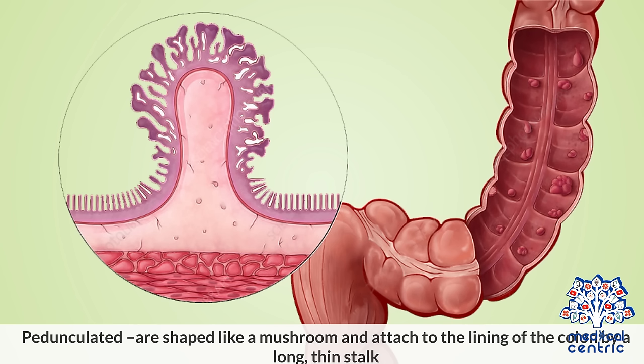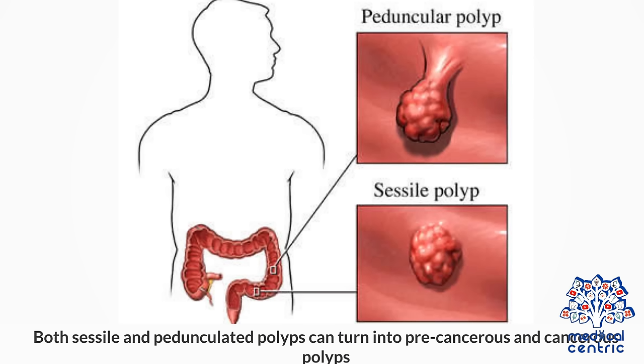Pedunculated polyps are shaped like a mushroom and attached to the lining of the colon by a long, thin stalk. Both sessile and pedunculated polyps can turn into precancerous and cancerous polyps.